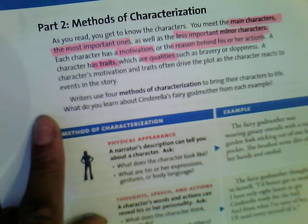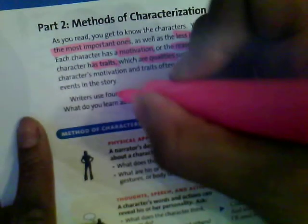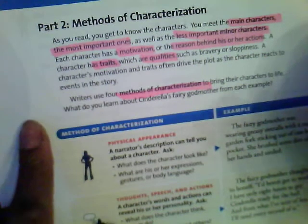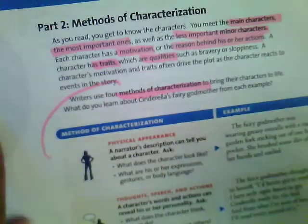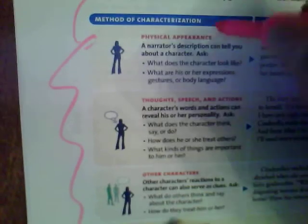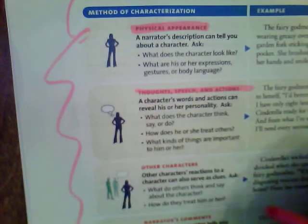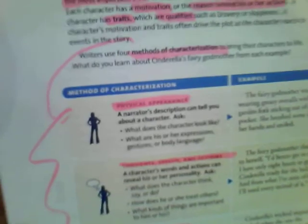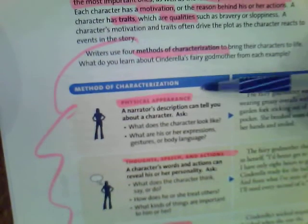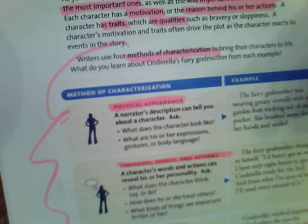Writers use four methods of characterization to bring their characters to life. The question is: what do you learn about Cinderella's fairy godmother from each example? Those four methods of characterization are listed right here on the side: physical appearance, thoughts and speech and actions, other characters, and the narrator's comments. These four things help us understand a character.